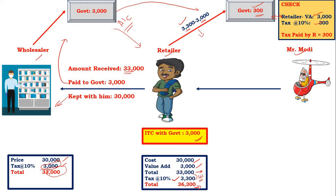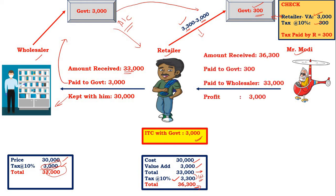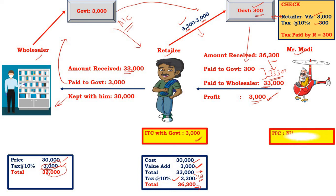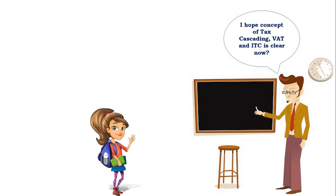Now let's check the retailer's total profit. Retailer received 36,300, paid government 300, paid wholesaler 33,000 — total outgoing 33,300. Profit: 36,300 minus 33,300 equals 3,000, which is exactly the value addition the retailer made. The final consumer cannot claim input tax credit, so Modi ji bears the full cost of 36,300.